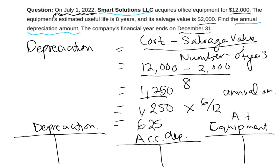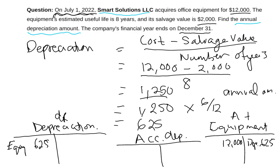Equipment is an asset and we bought it for $12,000, so $12,000 appears on the debit side. Since we are losing value, we reflect that in the equipment account: we credit equipment with $625 at the end of December. Correspondingly, we debit the depreciation expense account with $625 for the equipment.